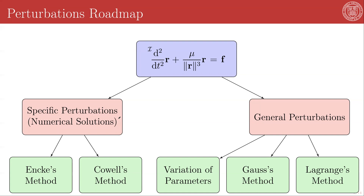We're going to start by looking at numerical solutions of this system and specific strategies to make those numerical solutions both more efficient and more tractable. We're also going to look at very specific perturbations — in particular, third-body and n-th-body gravitational perturbations. This will introduce NK's method and Cal's method. Then we'll start deriving tools for treating completely generalized forms of F and doing analysis on these specific perturbing forces.